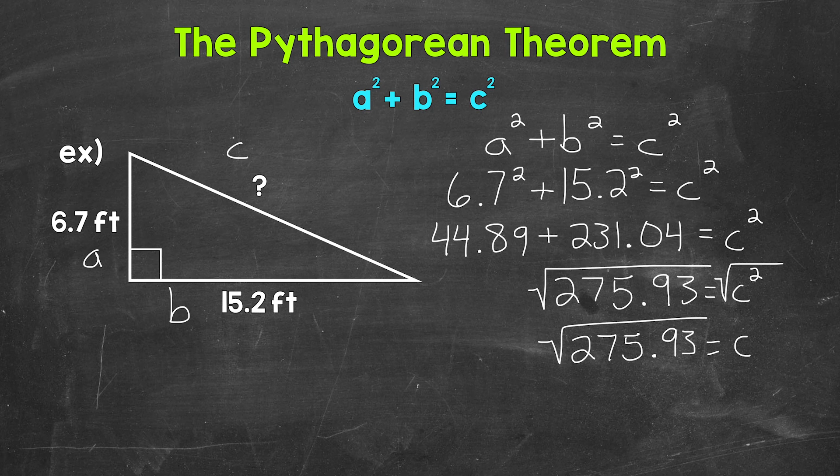So the square root of 275.93 is 16.61 and this continues on. So I wrote it to the hundredths place so that we can round it to the tenths place. There's a 6 in the tenths place with a 1 to the right in the hundredths.